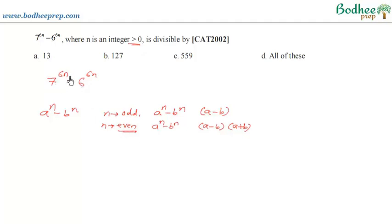To make the power even, it is not given that n is even here, but this can be manipulated like this way: 7 to the power 6n can be written as 7 cube whole to the power 2n.